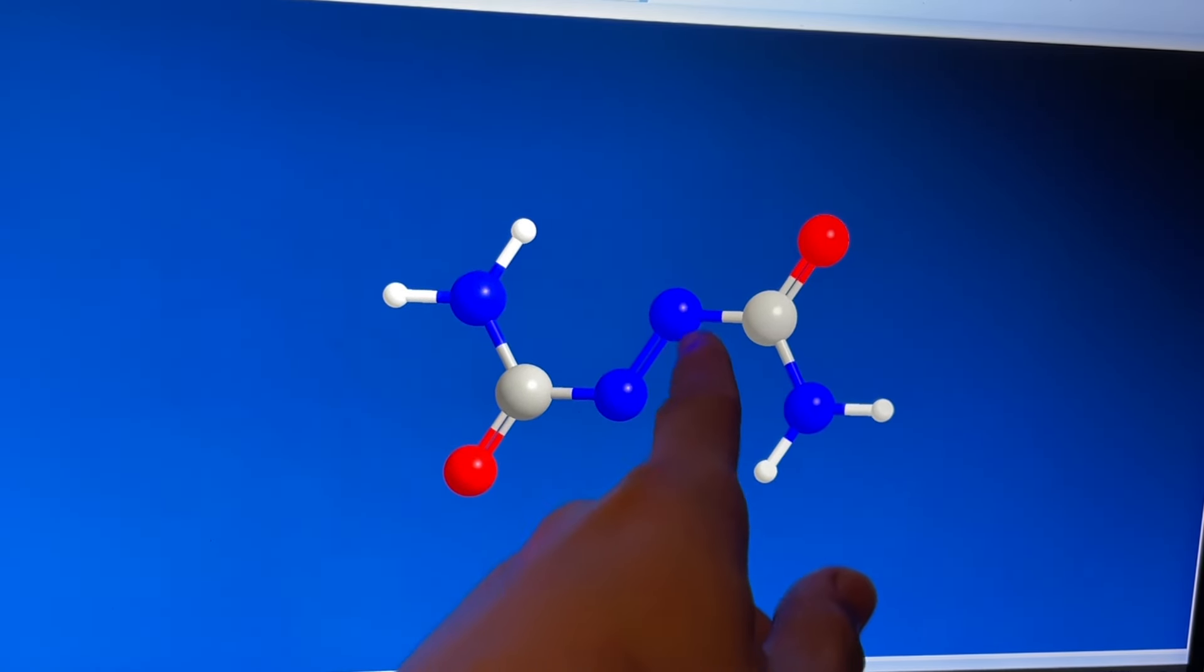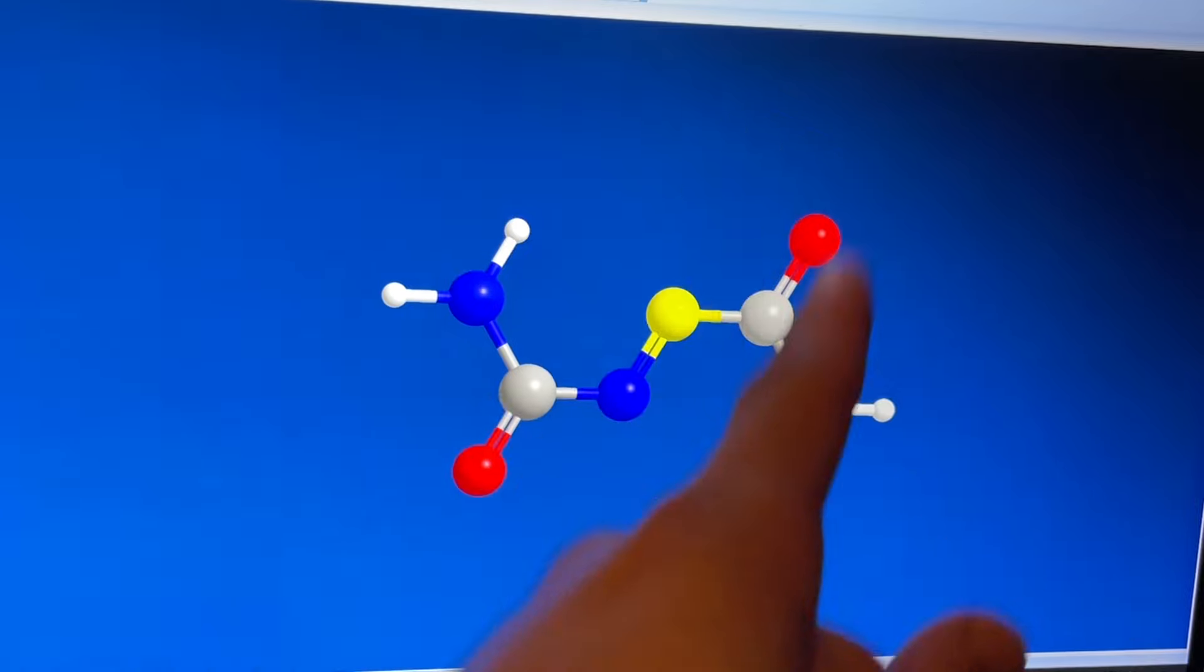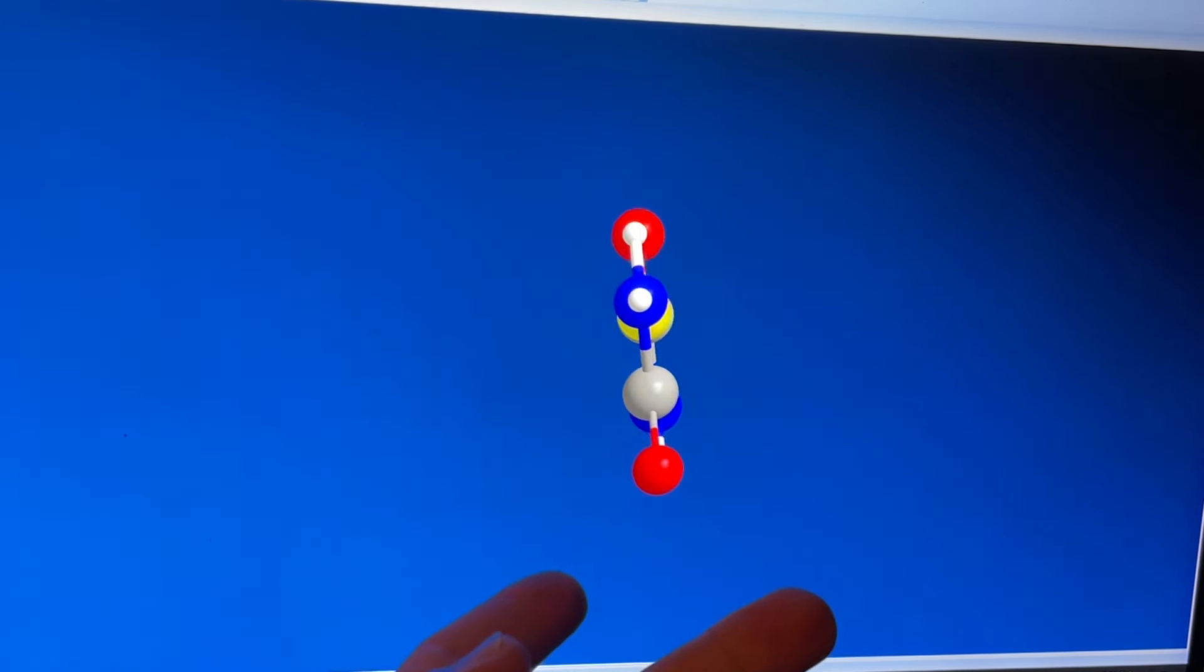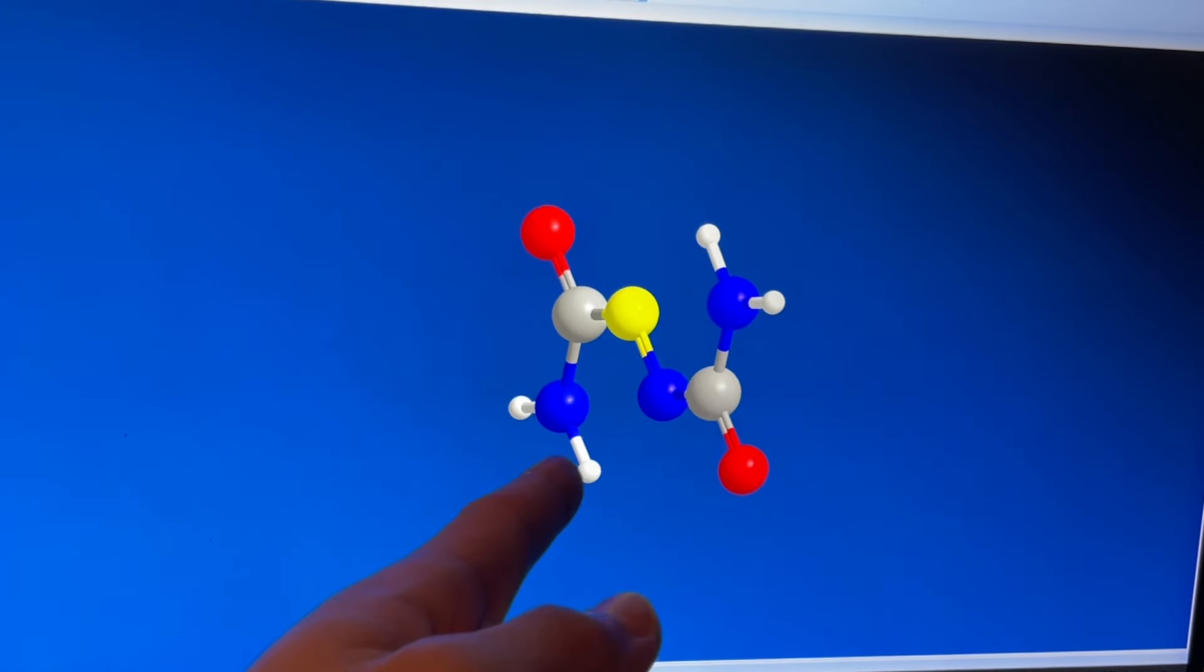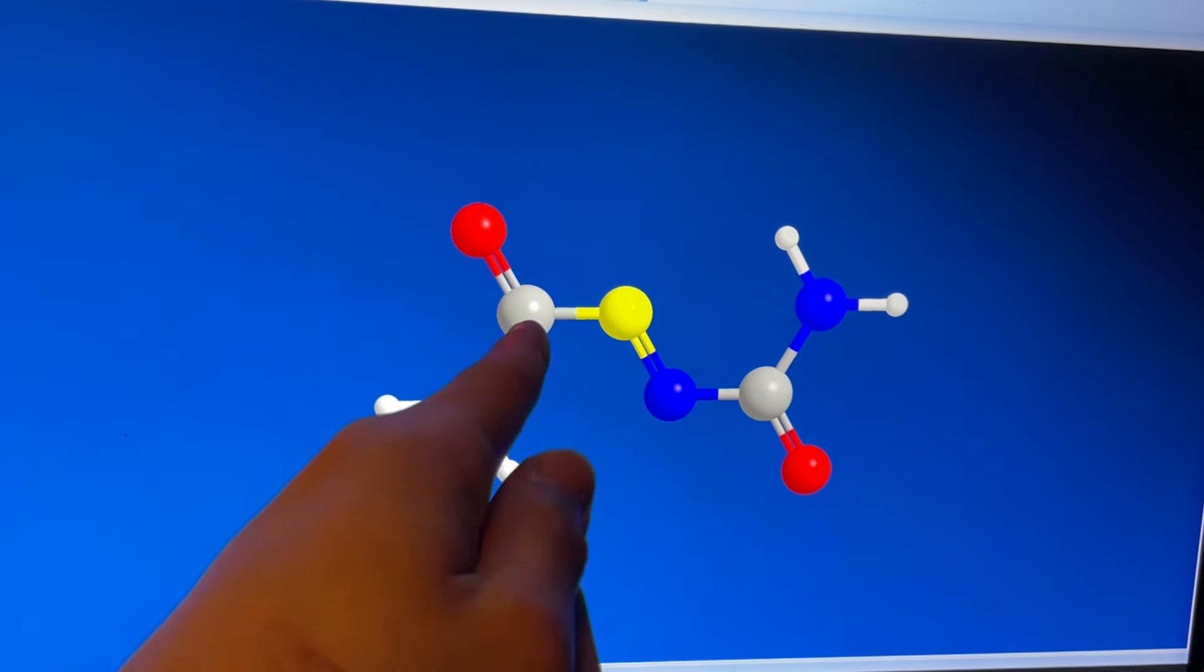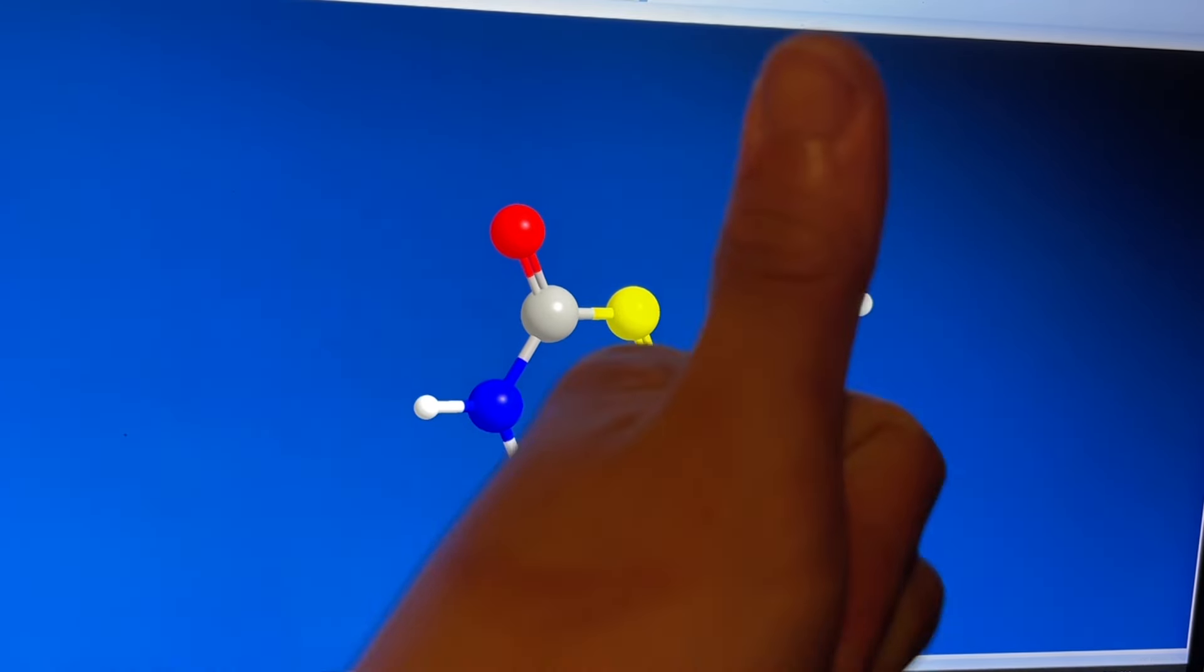Azo, as in the azo group. Di, as in two. Carbon, as in the element carbon. And amide, as in two amide groups. There you go. That's how you pronounce it. Azodicarbonamide. Simple.